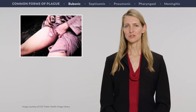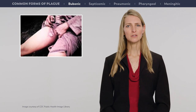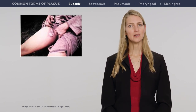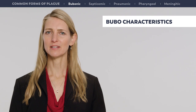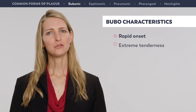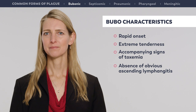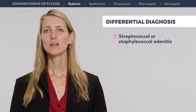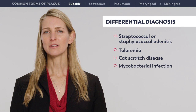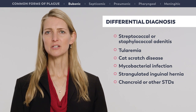Buboes are exquisitely tender and often remain enlarged and painful for a week or more after treatment has begun. Buboes can occasionally become fluctuant. In about five to ten percent of cases, inspection of the skin surrounding or distal to the bubo reveals the site of a flea bite marked by a small papule, pustule, scab, or ulcer, which in some instances may be confused with lesions caused by tularemia or anthrax. Plague buboes are distinguishable from most other causes of lymphadenitis by their rapid onset, extreme tenderness, accompanying signs of toxemia, and absence of obvious ascending lymphangitis. Differential diagnosis for bubonic plague includes streptococcal or staphylococcal adenitis, tularemia, cat scratch disease, mycobacterial infection, strangulated inguinal hernia, and chancroid or other sexually transmitted diseases that cause regional lymphadenitis.